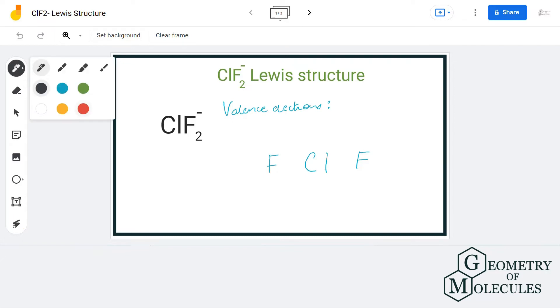Here we have one chlorine atom and two fluorine atoms. Both of these atoms have seven valence electrons in their outer shell. As there is a negative charge, it indicates that it is accepting an additional electron to form this structure.